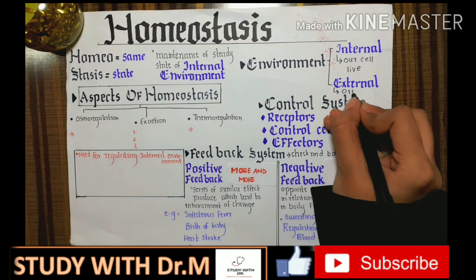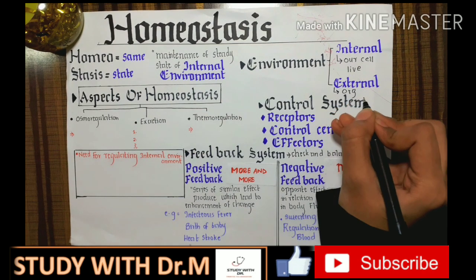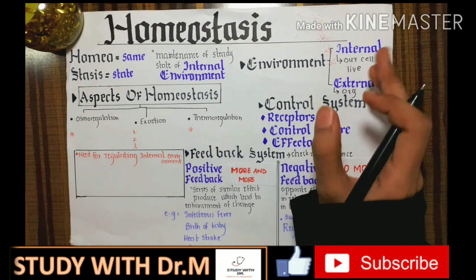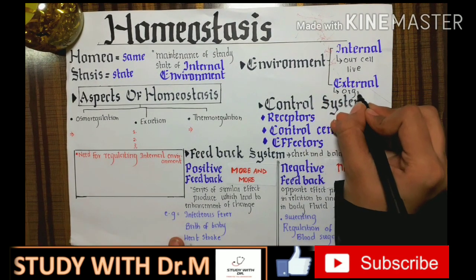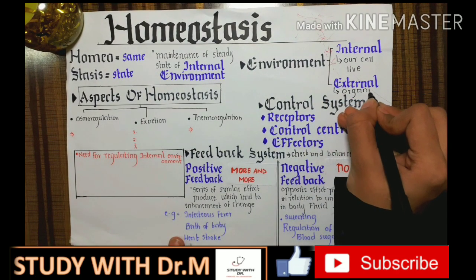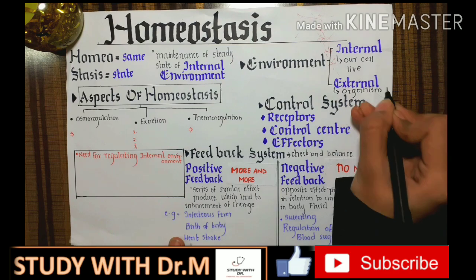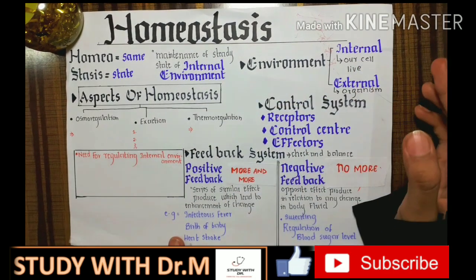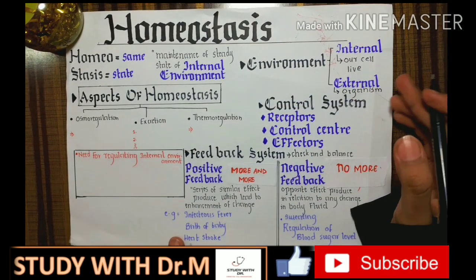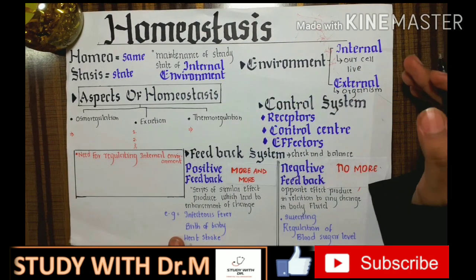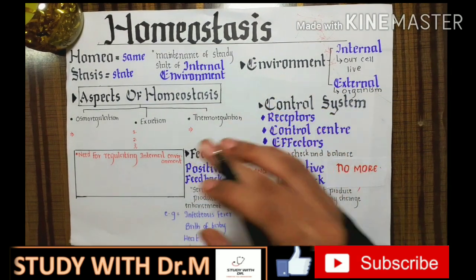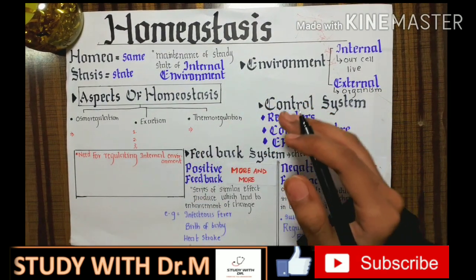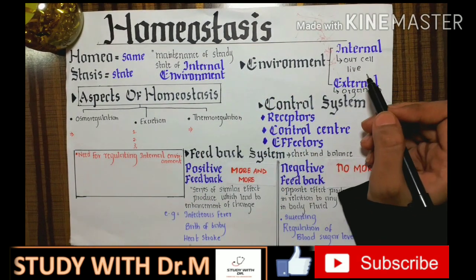The external environment is the one in which the organism itself lives. For example, we live on land, so our external environment is land. Fishes live in water, so the external environment for fishes is water. Different plants also have different external environments — some live in deserts and some live in rainforests.